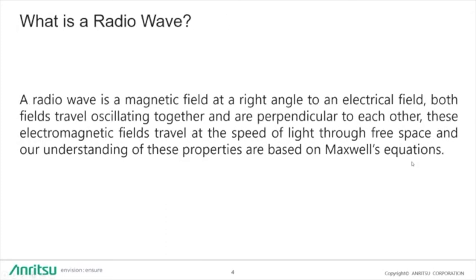As a quick review: a radio wave is a magnetic field at a right angle to an electrical field. Both fields travel oscillating together and are perpendicular to each other. These electromagnetic fields travel at the speed of light in free space, and our understanding of them is based on Maxwell's equations.